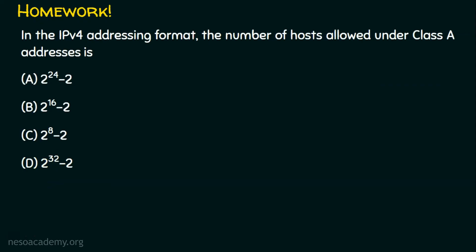Before we conclude, let's see the homework question. In the IPv4 addressing format, the number of hosts allowed under class A addresses is: Option A: 2 power 24 minus 2, Option B: 2 power 16 minus 2, Option C: 2 power 8 minus 2, and Option D: 2 power 32 minus 2. Just refer to the table or think logically and post your answer in the comment section.